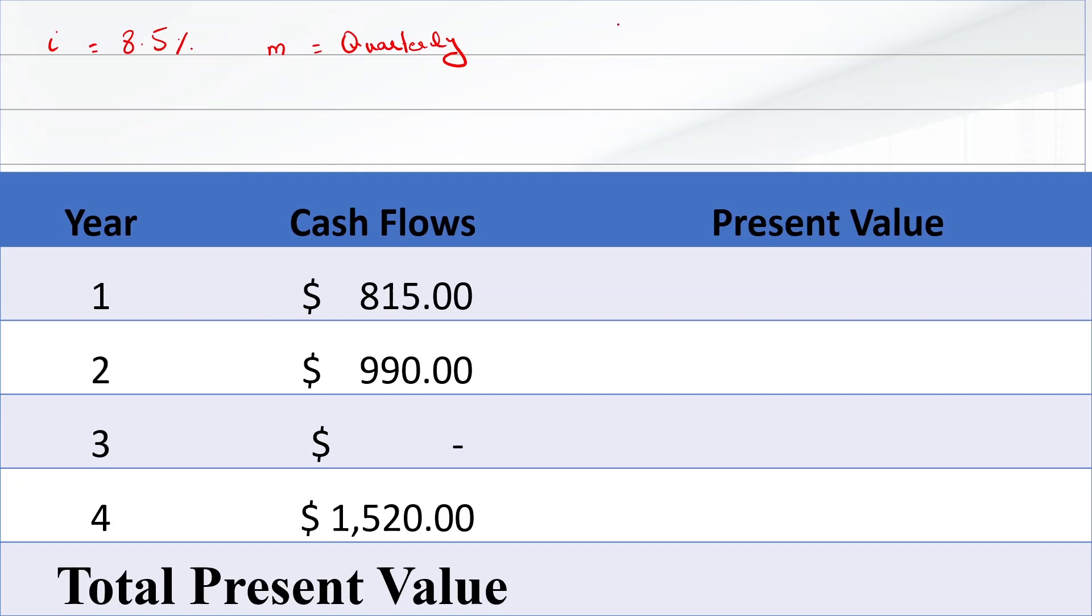EAR equals 1 plus APR divided by M raised to power M minus 1. That will be equal to 1 plus 0.085 divided by 4 and raised to power 4 minus 1, and the answer is 0.0877, which is 8.77%.